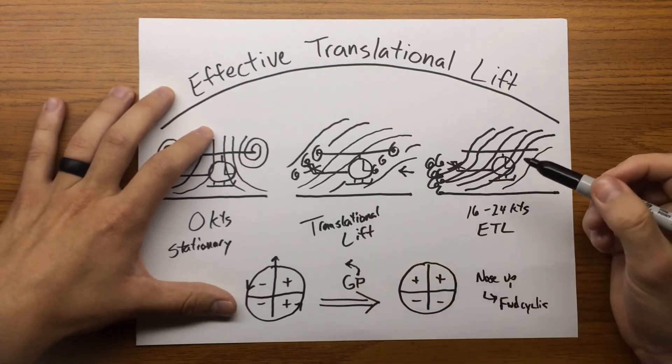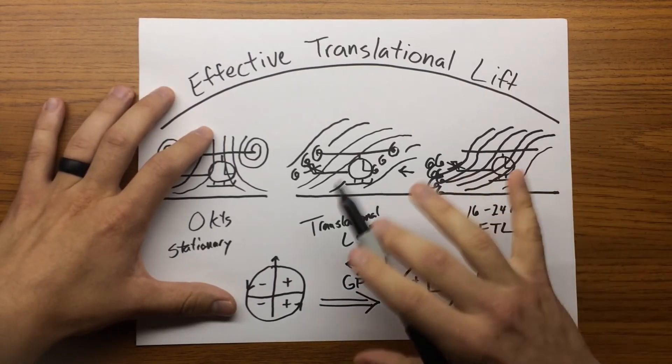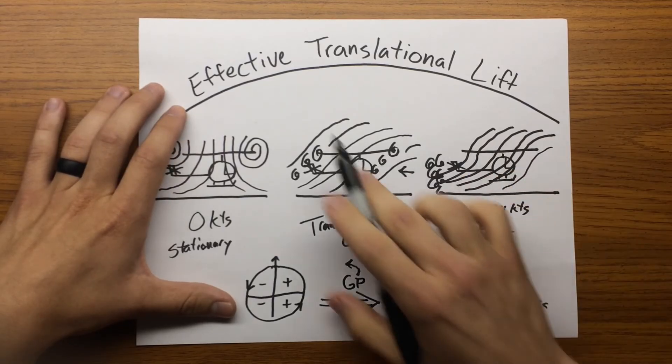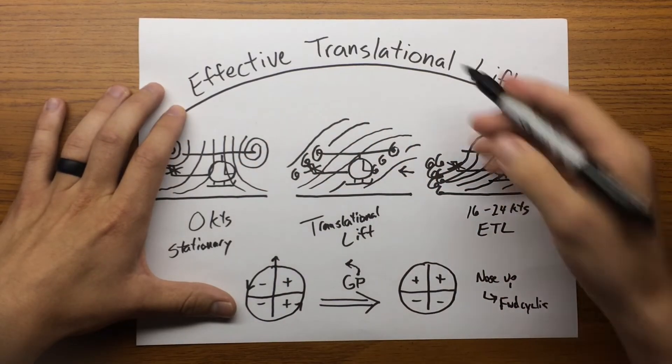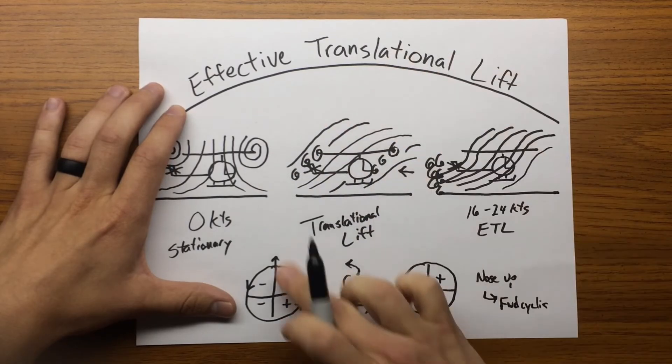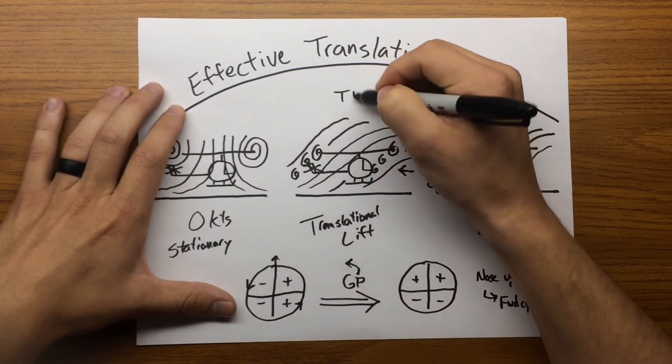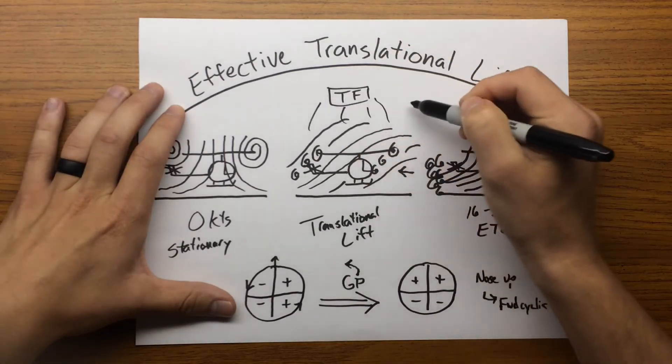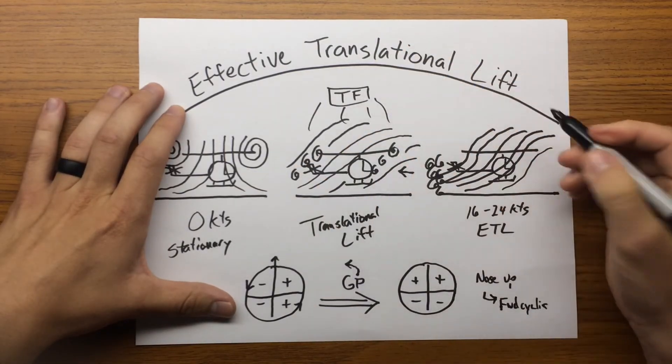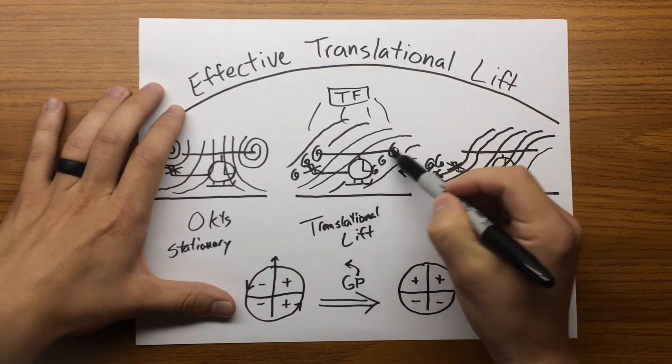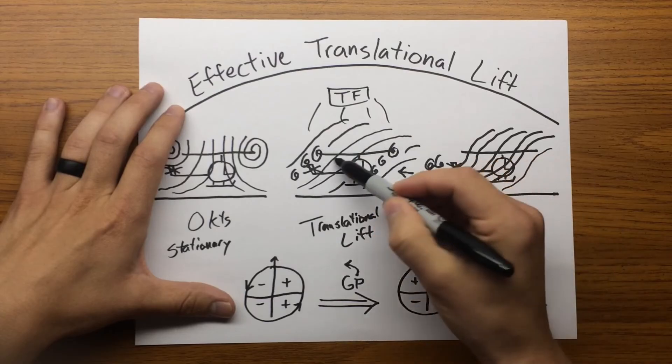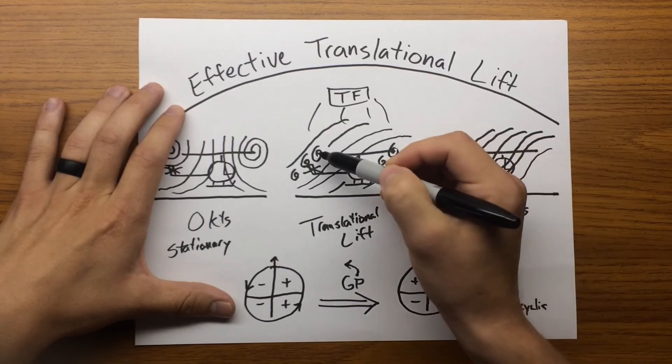Now, we talked about in another video about transverse flow. And I really want to take this time to clarify the difference between transverse flow and effective translational lift. Transverse flow is going to happen between 10 to 20 knots, so it's going to be in between this transition to ETL. At some point in between here and here, we're going to go through transverse flow. Transverse flow is the difference in airflow from horizontal on the front half to vertical on the aft half.